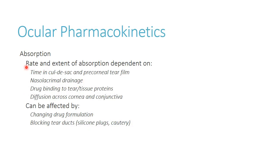Looking at kinetics, absorption into the eye is dependent on several factors. The rate and extent of absorption depend on time in the cul-de-sac — the longer it's there, the better absorption will be. The precorneal tear film can also affect absorption. We'll also talk about nasolacrimal drainage — the faster things drain away, the less time they have in the cul-de-sac. Drug binding and diffusion across the cornea and conjunctiva matter too, governed by Fick's law, which we covered in pharmacodynamics.